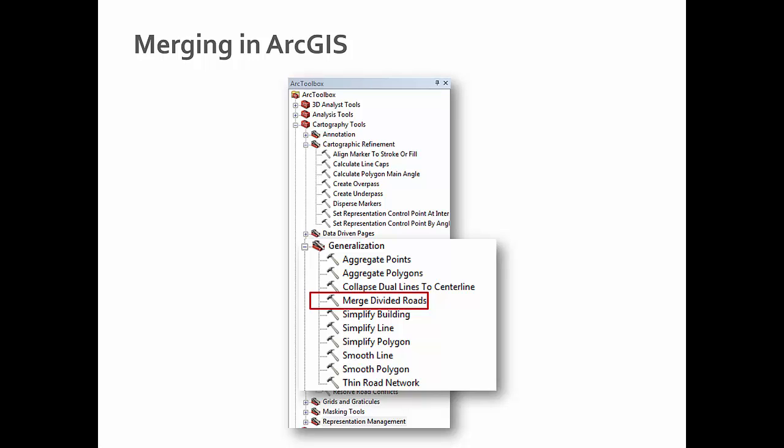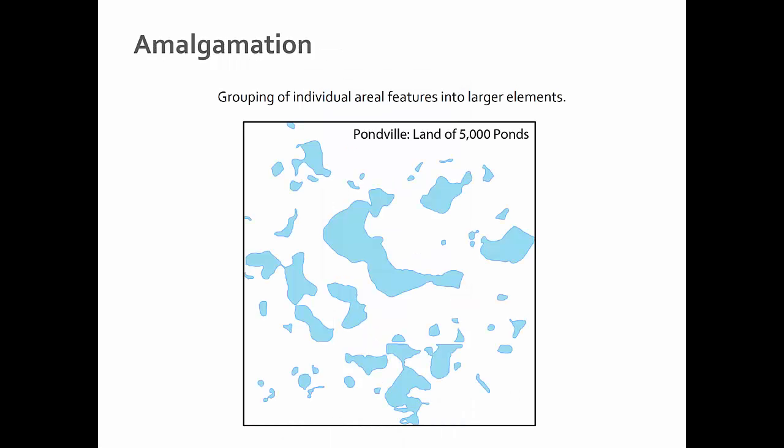In ArcGIS you can merge divided roads and use this feature to do other sorts of line merging. Amalgamation — and if nothing else, that's a fun word to say.